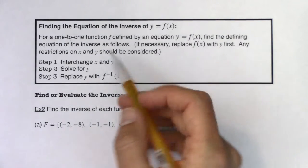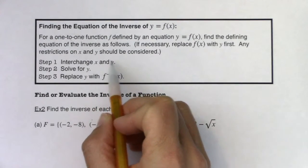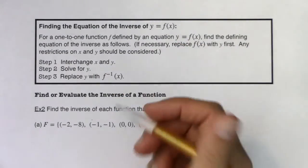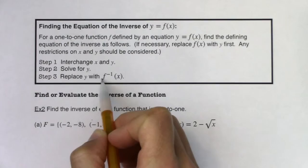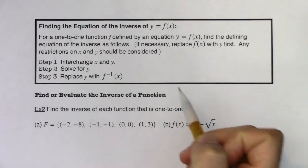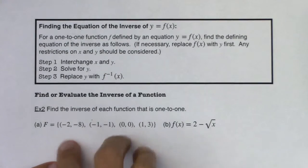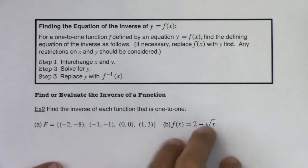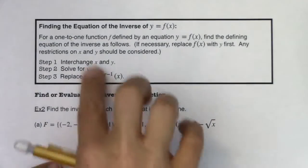If I give you a function, what I want you to do is interchange x and y — that will be step one. So wherever you see an x, write a y; wherever you see a y, write an x. Just flip-flop the letters. Or if you have ordered pairs, flip-flop the order. Then I want you to solve for y. And once you solve for y, we're going to replace y with the symbol f inverse of x. So these will be our three steps. We're going to play that out in part b. I'll show you how to do it with ordered pairs — it's a little simpler. It's a little bit trickier when it's an analytical function. This is going to be numerical; this is analytical.